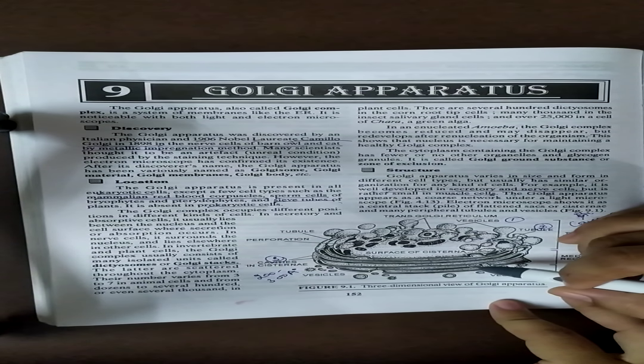First we discuss the cisternae. They are sac-like structures, unbranched structures. Next structure is tubules.